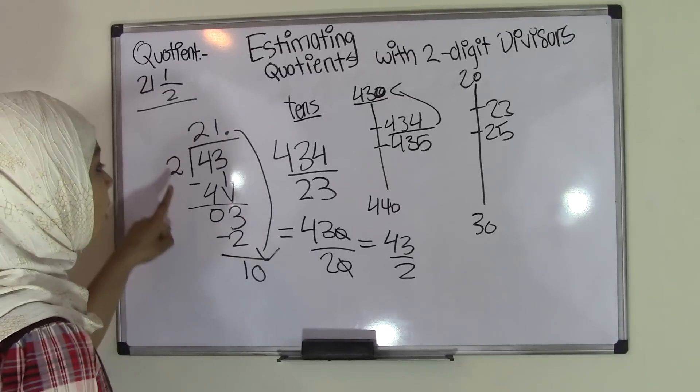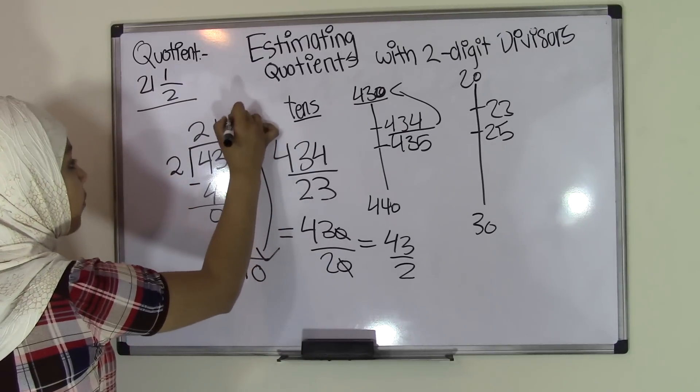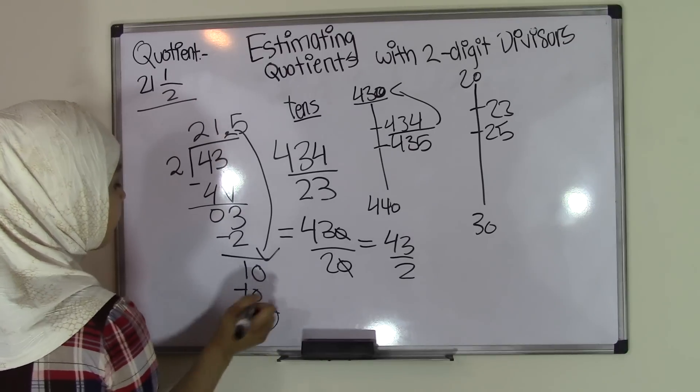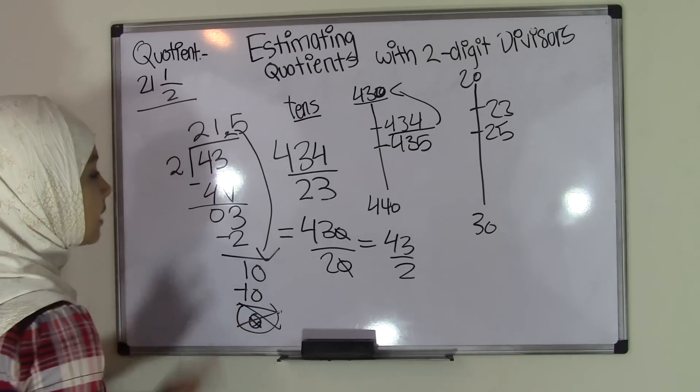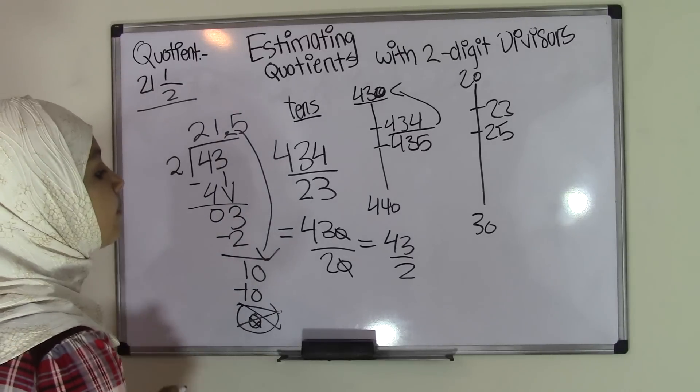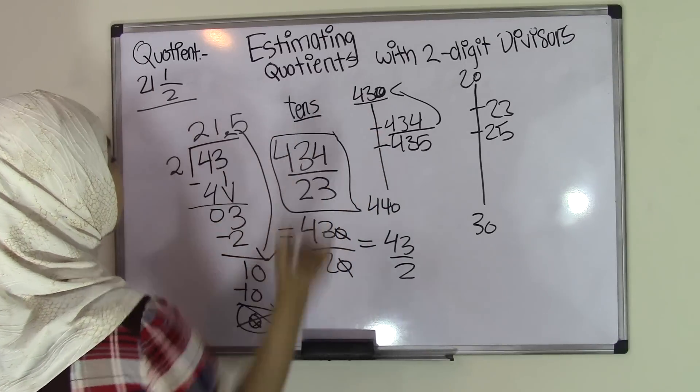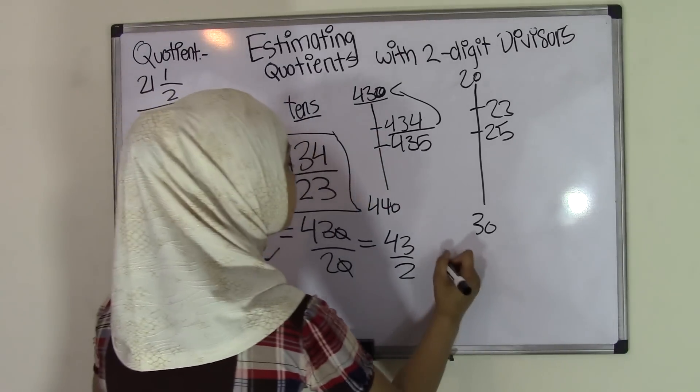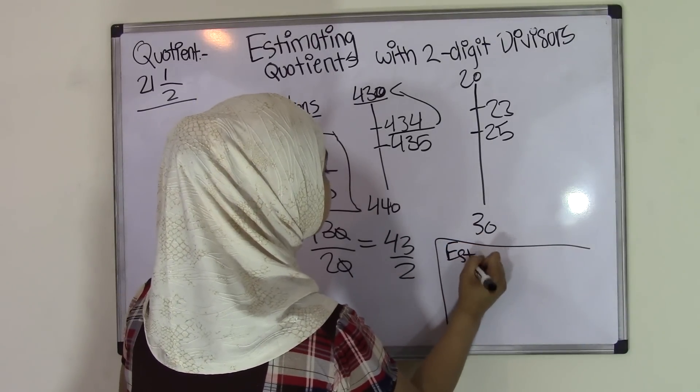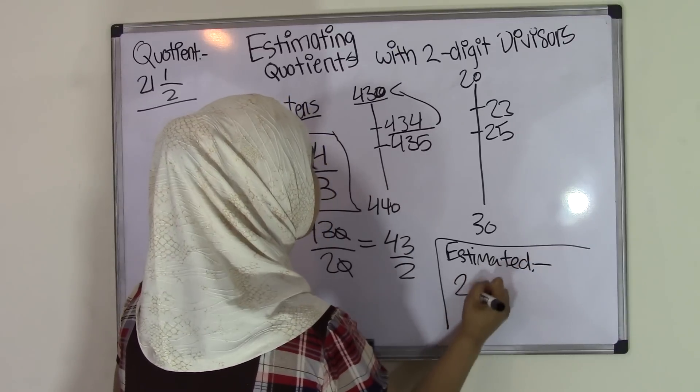Now we know that we can divide 10 by 2 because 2 times 5 equals 10. After the decimal point, we're going to put 5 because 2 times 5 is 10. Put the 10 here. And now we do not have a remainder. That means our estimated quotient for 434 divided by 23 would be 21.5.